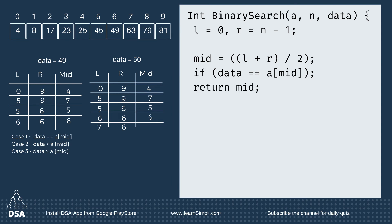If that condition is not true, then we write: else if data is less than a[mid], R becomes mid minus 1. Else, L is equal to mid plus 1. All these steps will perform while L is less than or equal to R — that is, in a while loop.